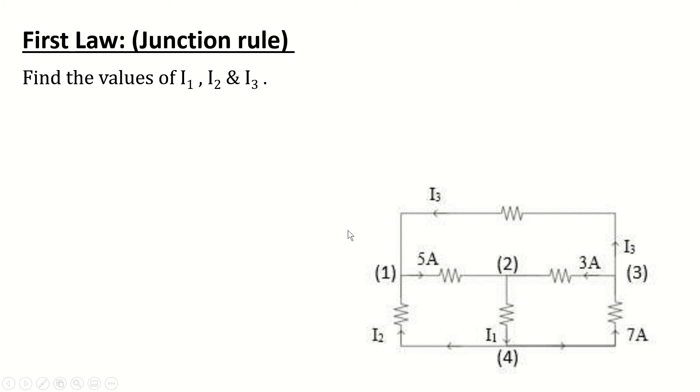To find the values of I1, I2, and I3, let's begin from the node at which, or the resistance at which the current equals 7 Ampere. So, it divides here to 3 Ampere and unknown value. So, I3 must equal 4 Ampere.